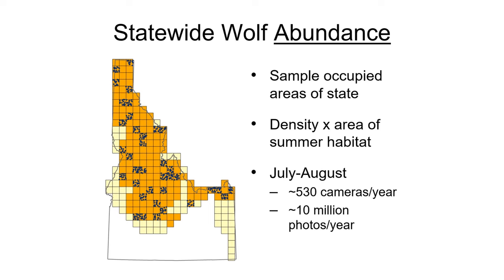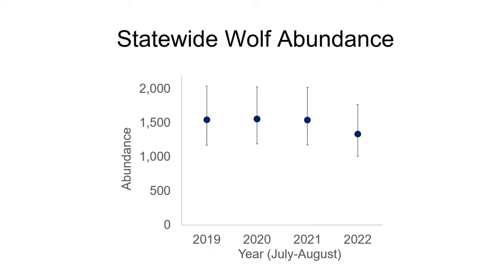On average during 2019 through 2022 we deployed about 530 abundance cameras that took about 10 million photos each year. The abundance estimates generated to date suggested a fairly stable population of about 1,550 wolves statewide during the summers of 2019 through 2021, with a slightly lower estimate of about 1,340 wolves in summer of 2022.